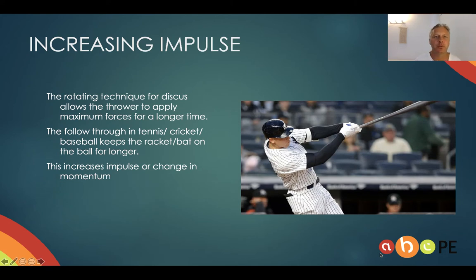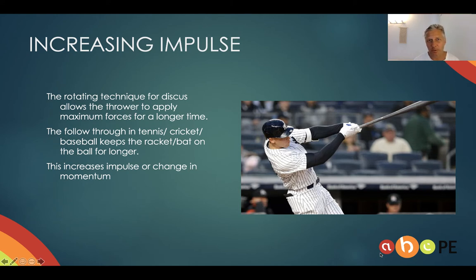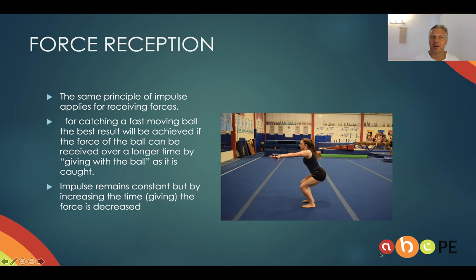There are plenty of sporting examples where we're trying to increase impulse as much as possible. In baseball, they're trying to hit the ball as far as possible, applying as great a force as possible over as long a period of time as they can — doing that by following through and keeping the bat on the ball. Discus and shot put also use a rotation technique where they're applying force for as long as possible, increasing impulse, increasing change of momentum, and sending the implement flying as far as possible.